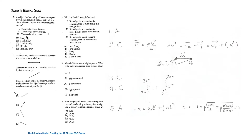The first question: an object moving with constant speed travels once around a circular path. Which of the following is true concerning this motion? The displacement is zero, the average speed is zero, or the acceleration is zero.